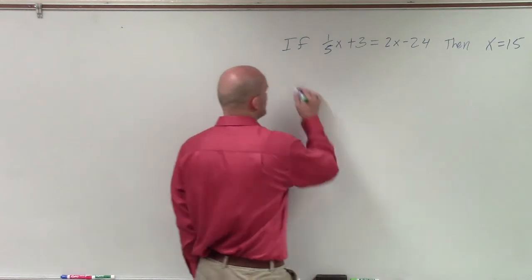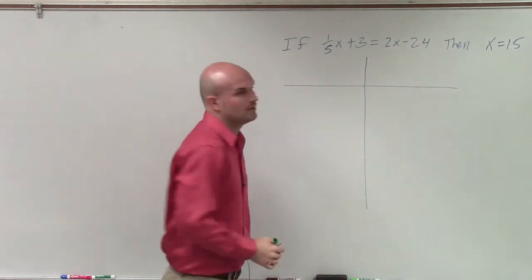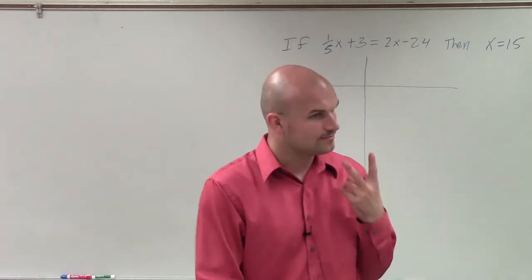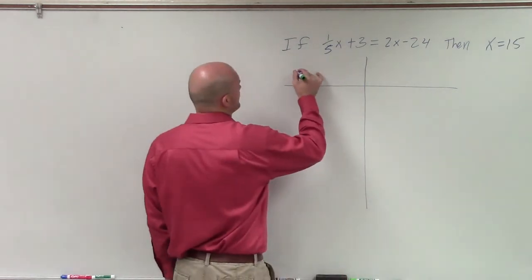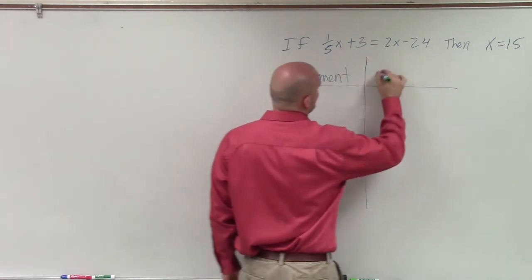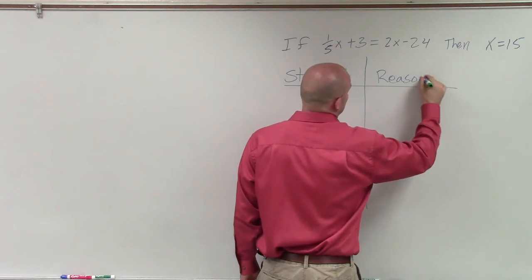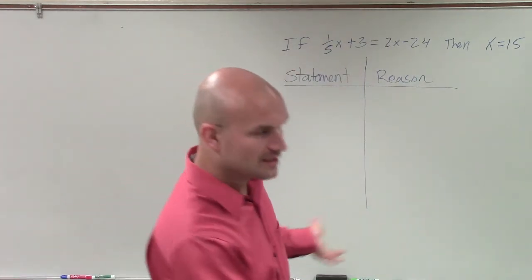So to do that, what we're going to do is we're going to create a proof. And when creating a proof in this class, what we're going to use is what we call a two column proof. So you're going to have two columns. On top of those columns, we're going to have a header. And the first one is going to be a statement, and then a reason for making that statement.